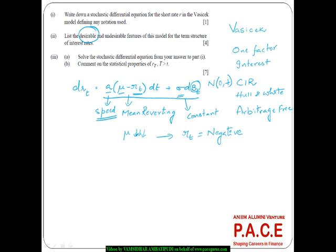When applied back to historical data, the model is not able to generate realistic yield curves. When testing it against historical data, it does not provide a good fit — whatever it generates is in some cases not realistic and does not fit properly to historical data.